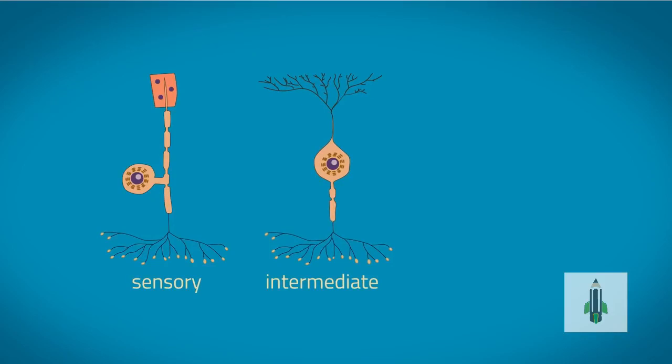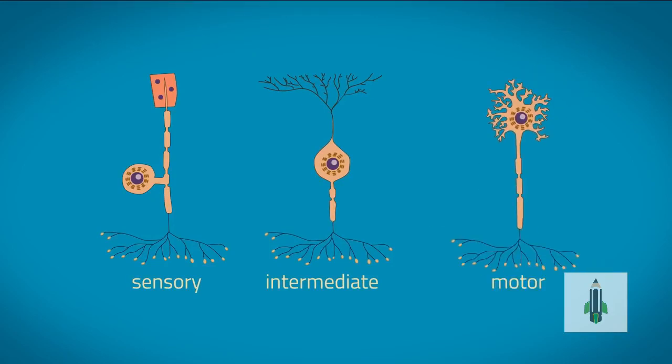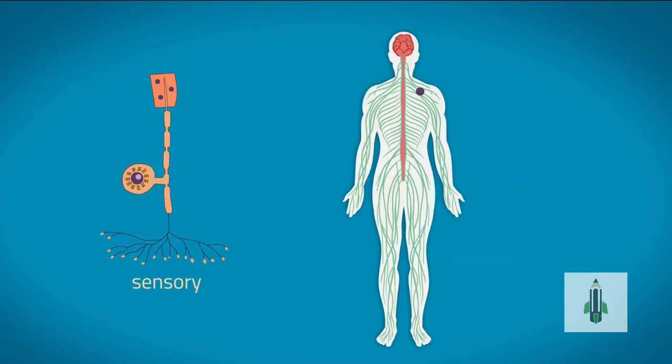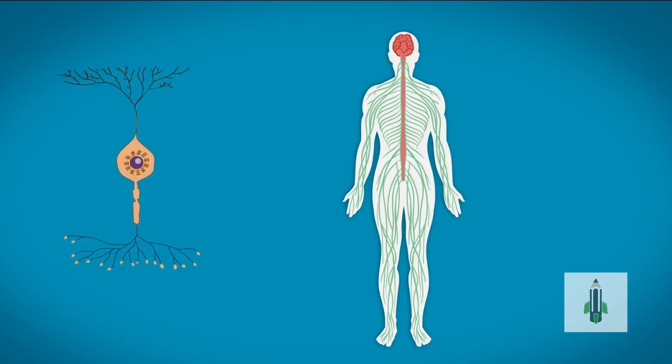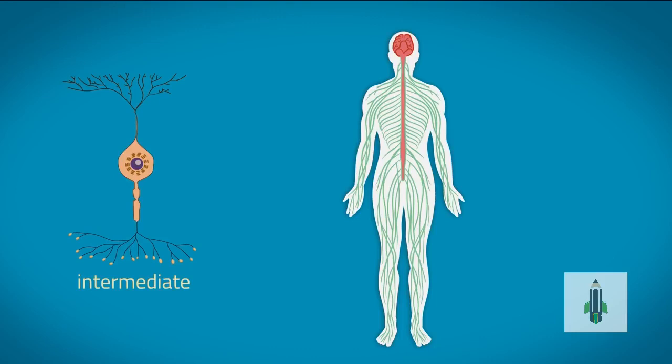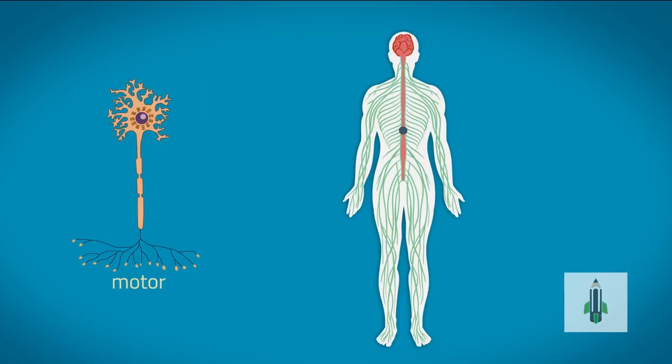intermediate or relay, and motor neurons. These specialized cells carry information as tiny electrical impulses and make up the nervous system. Sensory neurons carry signals from receptors to the spinal cord and brain. Intermediate and relay neurons carry messages from one part of the central nervous system to another. Motor neurons carry signals from the central nervous system to effectors.